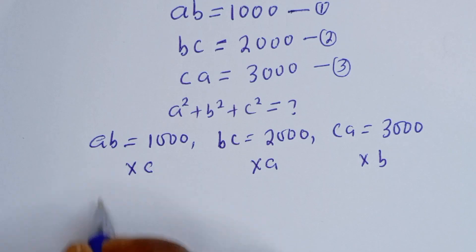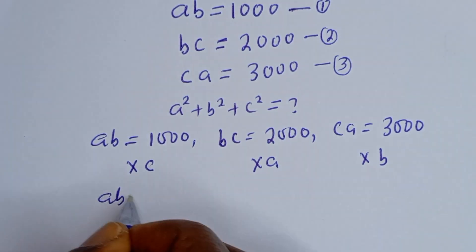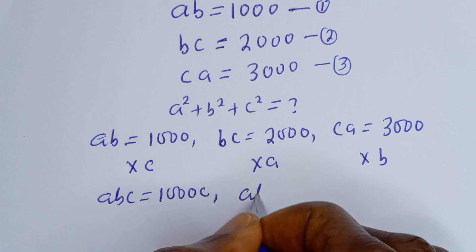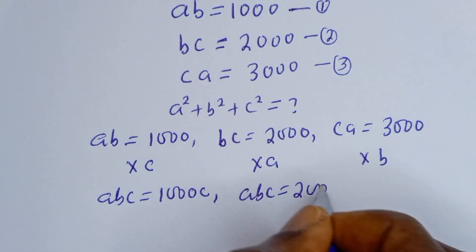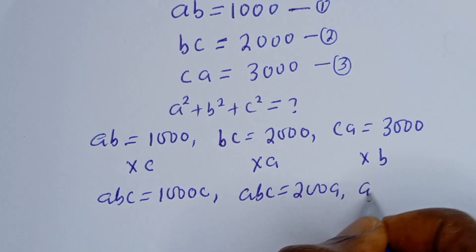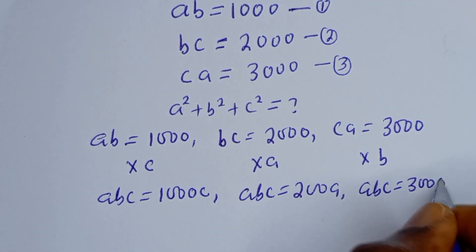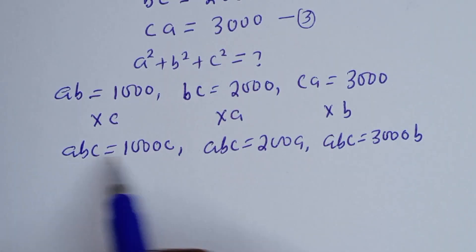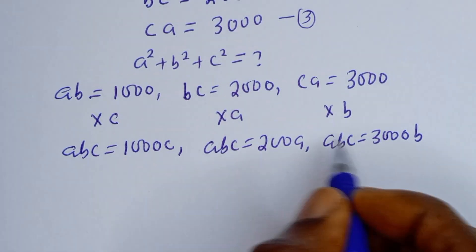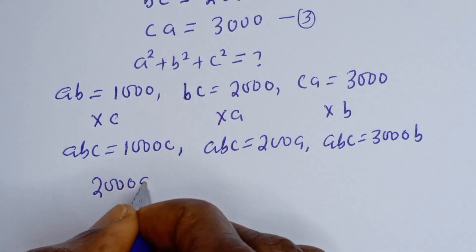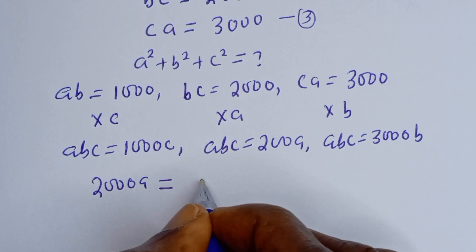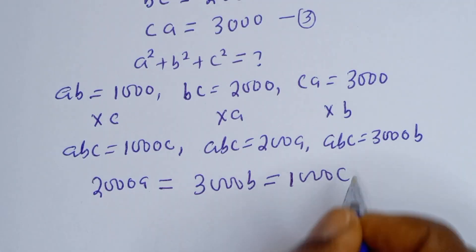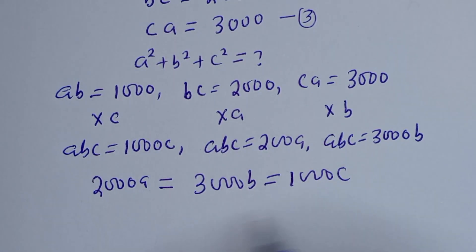Then we have A·B·C equal to 1000C, A·B·C equal to 2000A, and A·B·C equal to 3000B. If you look at this, we have A·B·C on all three sides, so let's rearrange: 2000A equals 3000B equals 1000C.